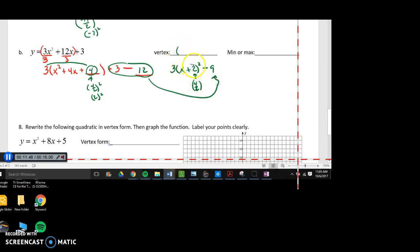So, right away, my vertex is the opposite of 2 is negative 2, then negative 9. If I look, a is positive 3. Since a is positive, I know it opens up. Since it opens up, I know my vertex is a minimum.